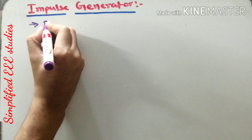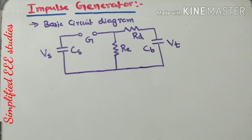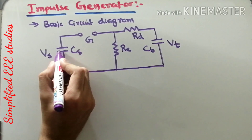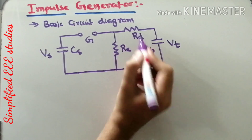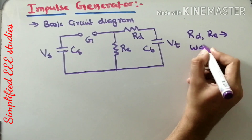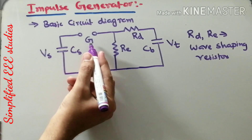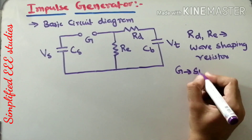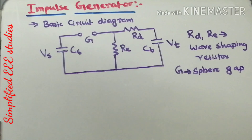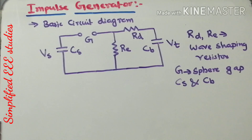Now let us see the basic circuit diagram of an impulse generator. First of all, we have the input capacitor CS. Then we have RE and RD — those resistors are called wave-shaping resistors. Then we have the sphere gap arrangement, where G stands for sphere gap, and it will act as a switch. We also have input capacitor CS and output capacitor CD.